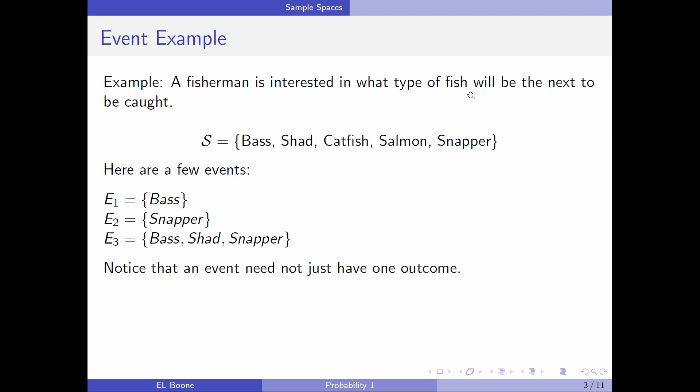Back to our fisherman example. Suppose a fisherman is interested in what type of fish will be the next to be caught. So suppose he's fishing with a pole so he can only catch one fish at a time. Let's suppose that the only type of fish that are there are bass, shad, catfish, salmon, or snapper.